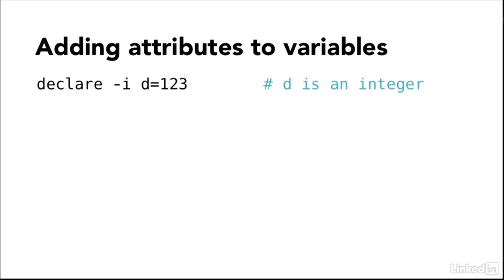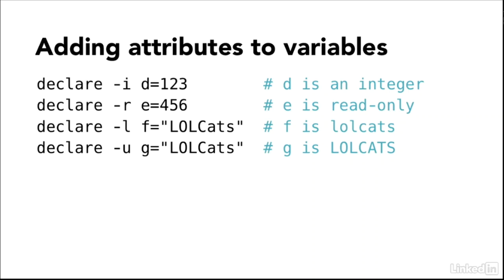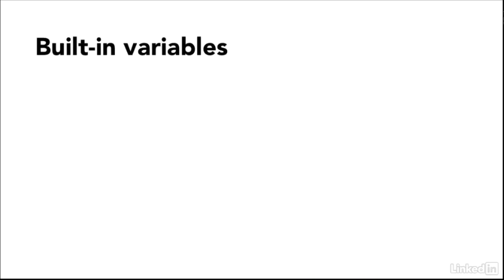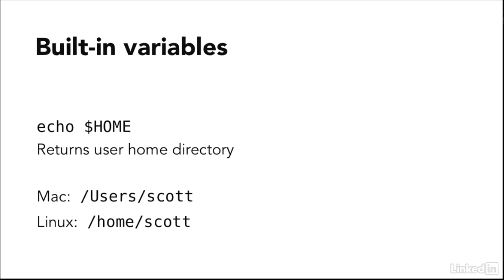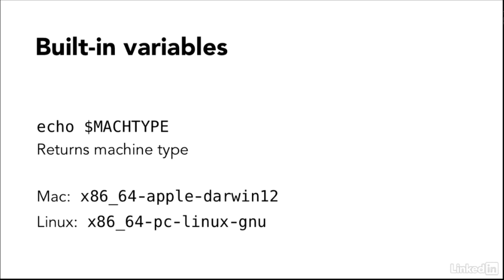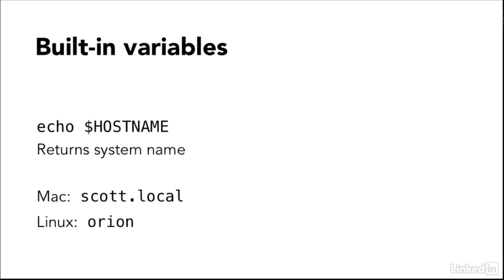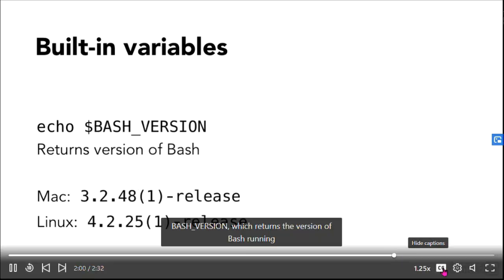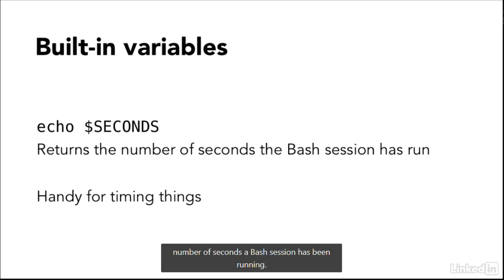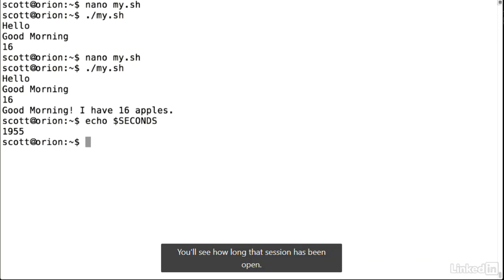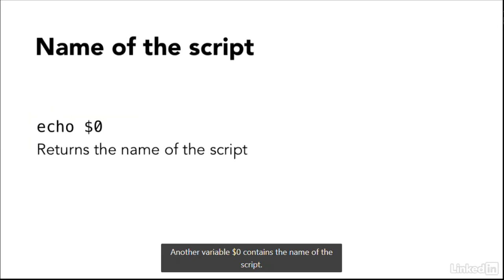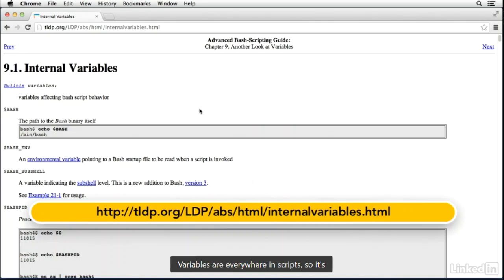You can give variables special attributes using the declare keyword. Declare -i marks a variable as an integer. Declare -r marks it as read-only, meaning it can't be modified later. You can also convert strings to lowercase or uppercase with -l and -u respectively. Special bash variables include HOME (user's home directory), PWD (current directory), MACHTYPE (machine type), HOSTNAME (system name), BASH_VERSION (version of bash running), and SECONDS (number of seconds the bash session has been running). The variable $0 contains the name of the script. Variables are everywhere in scripts, so it's important to have a good handle on them.